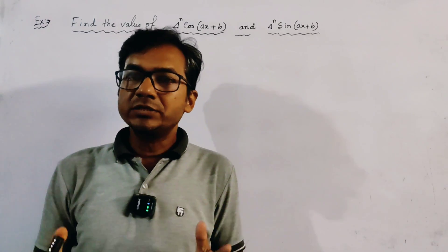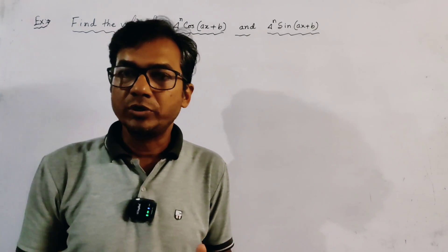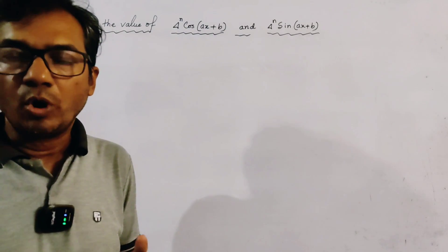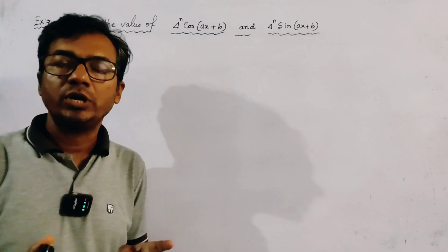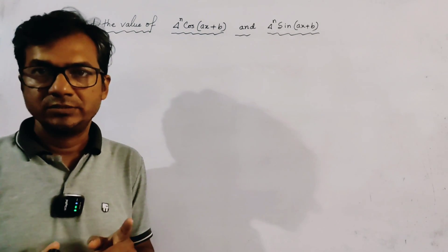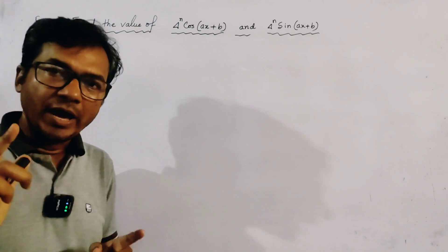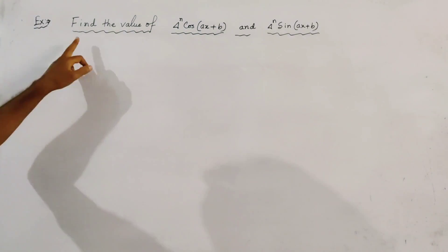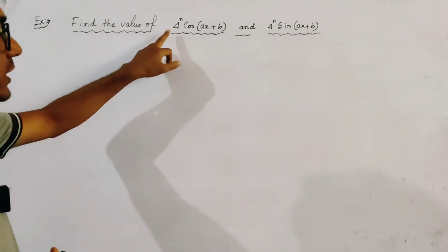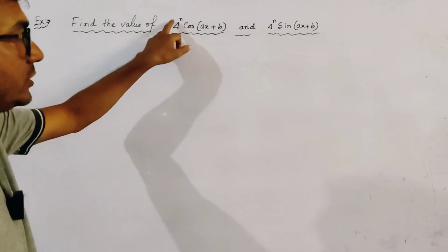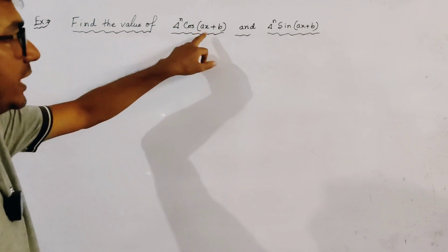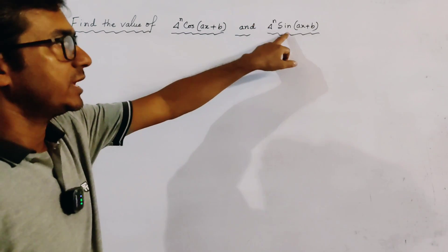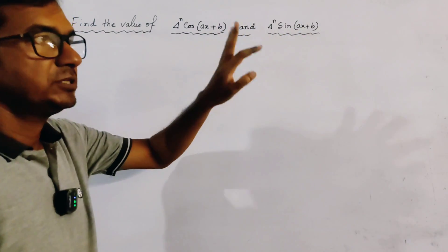Here we discuss an important application of nth order forward difference. The problem is: find the value of delta to the power n of cos(ax + b) and delta to the power n of sin(ax + b).